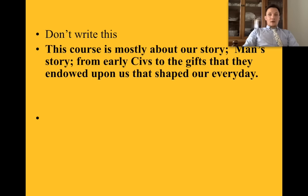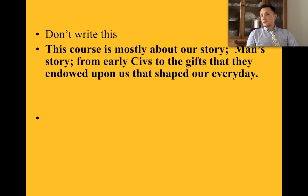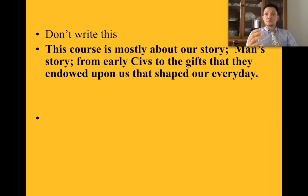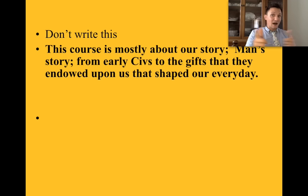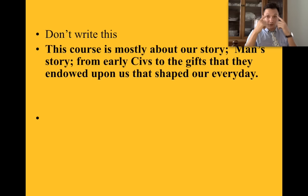This course is mostly about our story — man's story from early civilizations to the gifts they've endowed upon us as they shaped us every day. For example, you're writing right now on a piece of paper. The idea of paper originated from papyrus, an Egyptian invention of taking reeds and smashing them together to create sheets of paper. Egyptians also invented the first types of inkwell pens. Egyptian ladies invented eye makeup called Kohl — K-O-H-L — taking coal dust and mixing it with a viscous substance so you could dress your eyes with it.